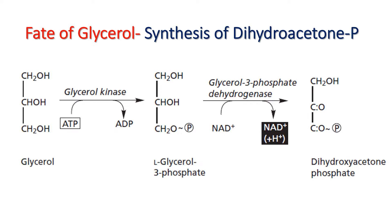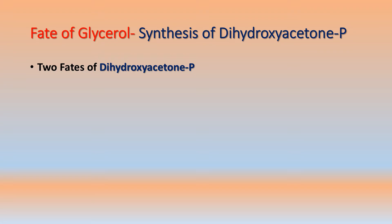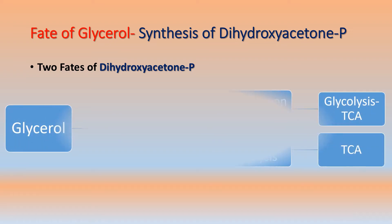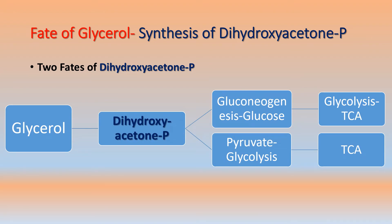So to recap: glycerol is converted into glycerol-3-phosphate and then into dihydroxyacetone phosphate. Dihydroxyacetone phosphate has two fates: one is its conversion into glucose through gluconeogenesis, and the other is its conversion into pyruvate, which is the same pathway we have seen during glycolysis.